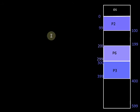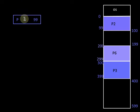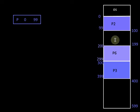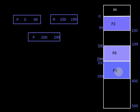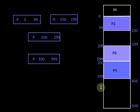For each partition we create one node such that the node consists of three fields. The first field represents whether this partition is a process or a hole. The second field represents the starting address of the partition, and the third field represents the ending address of the partition. In this example, the first partition is a process with starting address 0 and ending address 99; the next is a hole with starting address 100 and ending address 199; the next is a process from 200 to 299; and the last is a hole from 400 to 599.